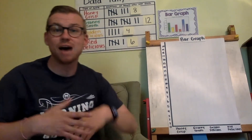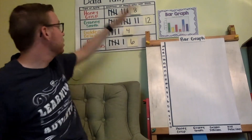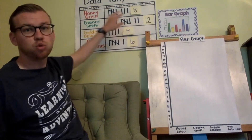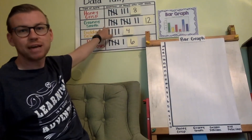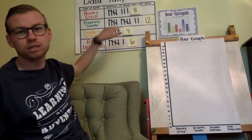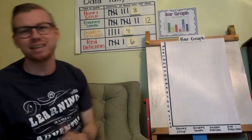So we've now interpreted the data. We've determined that eight people like Honeycrisp, twelve people like Granny Smith, four people like Golden Delicious, and six people like Red Delicious.